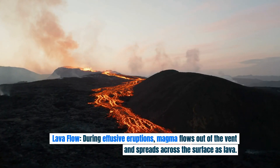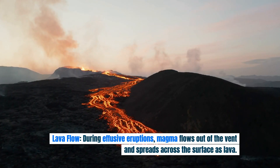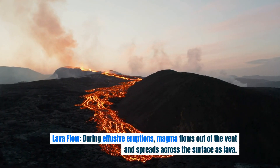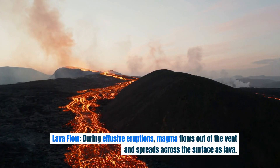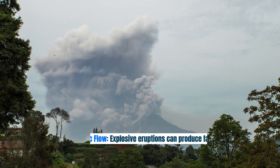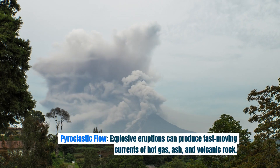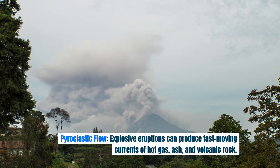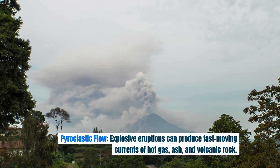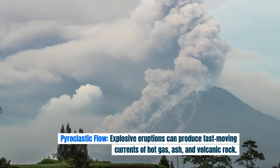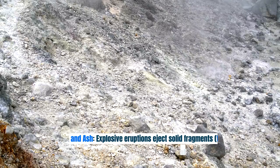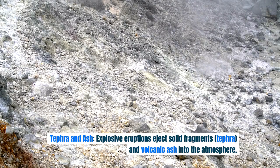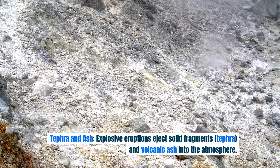Lava flow: during effusive eruptions, magma flows out of the vent and spreads across the surface as lava. Pyroclastic flow: explosive eruptions can produce fast-moving currents of hot gas, ash, and volcanic rock. Tephra and ash: explosive eruptions eject solid fragments, tephra, and volcanic ash into the atmosphere.